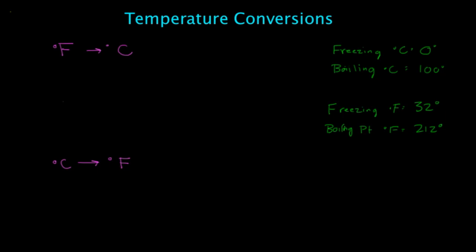In this video we're going to talk about temperature conversions and how to convert from degrees Fahrenheit to degrees Celsius and degrees Celsius to degrees Fahrenheit. Now the first thing that we need to realize is the freezing point in Celsius is 0 degrees. The boiling point in Celsius is 100 degrees.